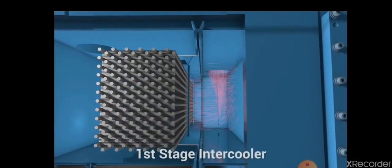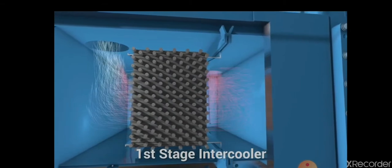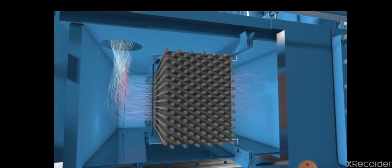After passing into the scroll casing, the heated air or gas flows through the inner-stage piping into the first-stage intercooler, causing the moisture to condensate and separate from the lower-velocity cooled air.